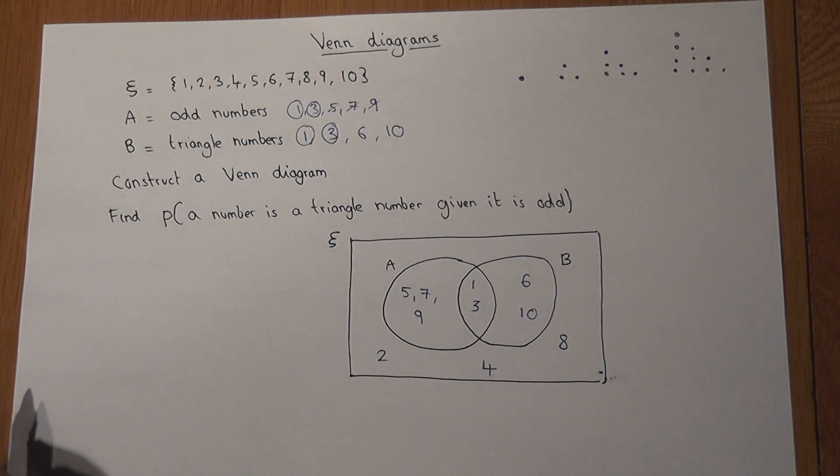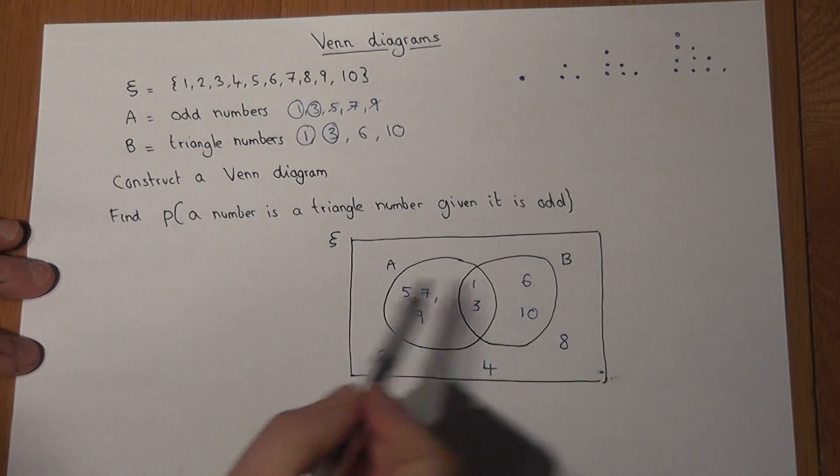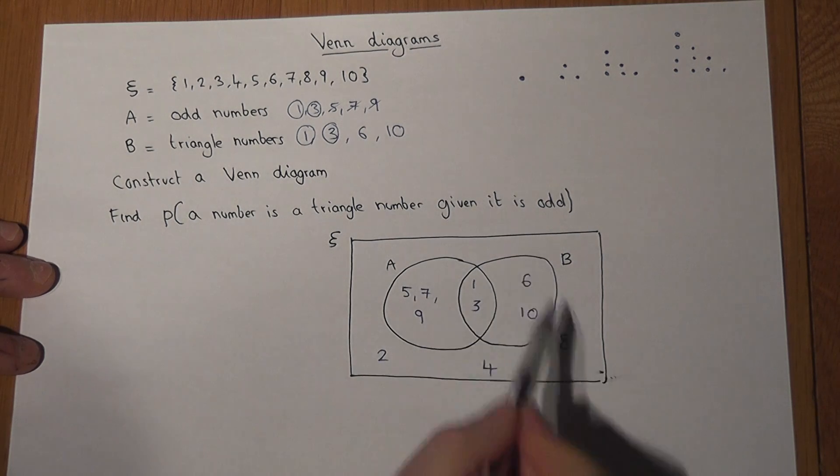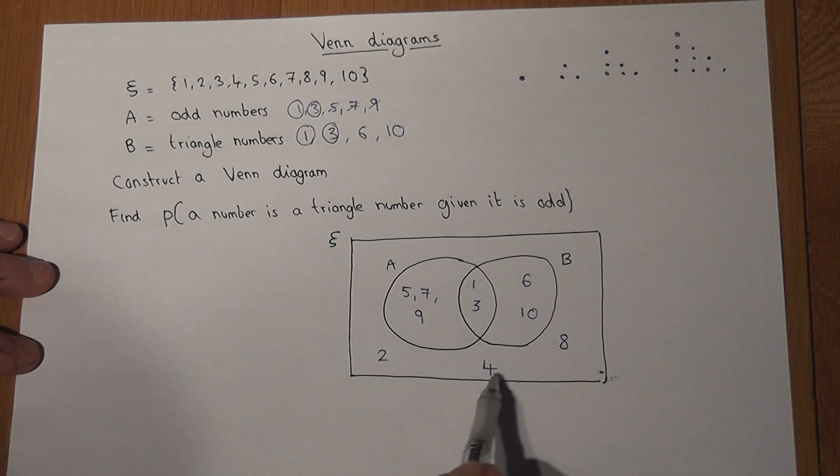So this Venn diagram shows me those 10 numbers, and whether they are odd, triangle, both, or neither.